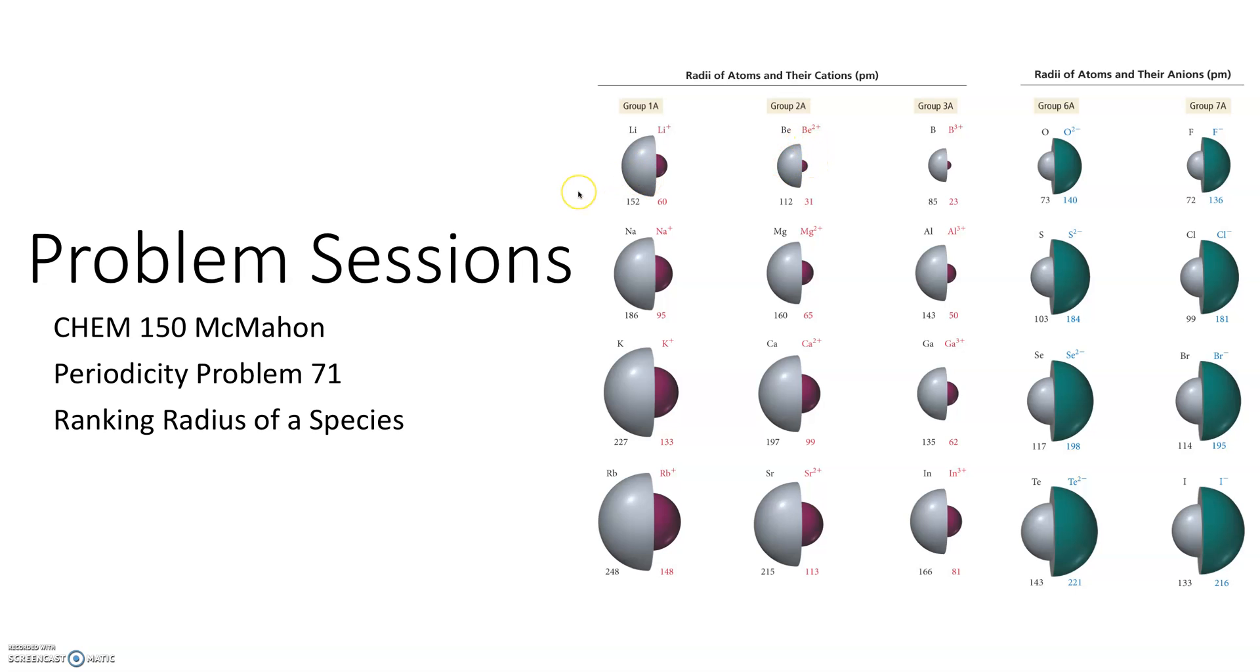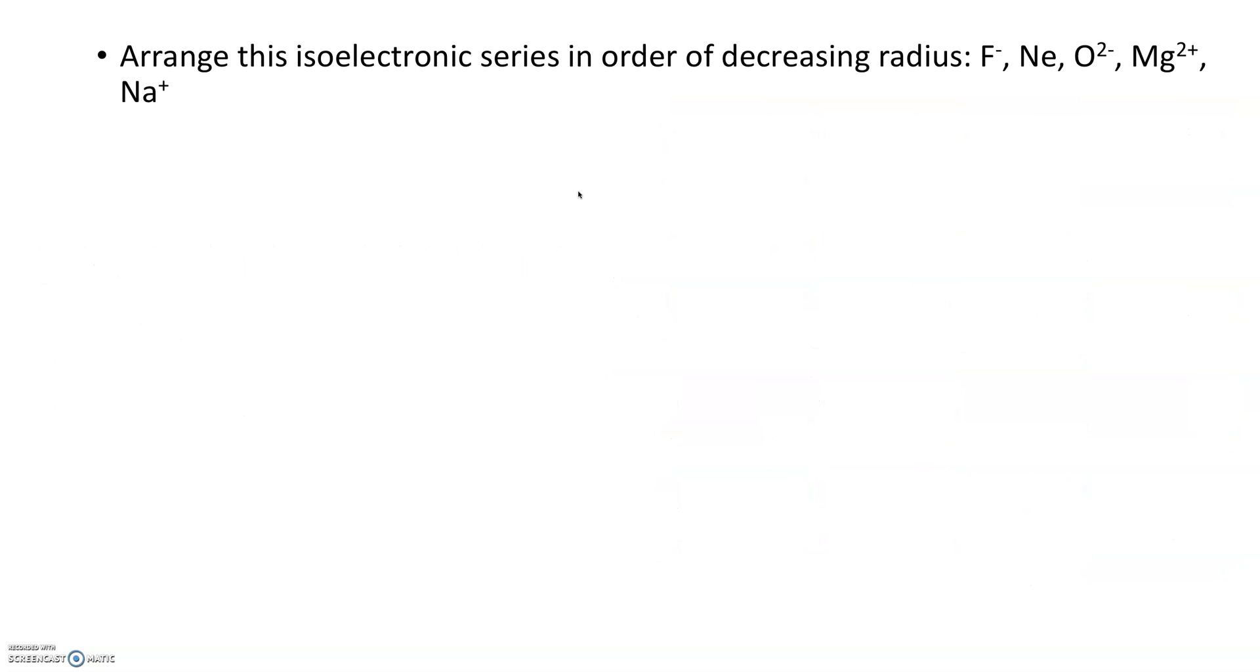So what do I do if I compare neutral atoms with cations and anions, and how to determine their ranking in radius if I don't have these nice charts in front of me? The problem reads: arrange this isoelectronic series in order of decreasing radius.